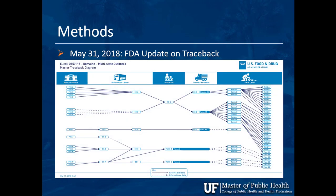May 31, the FDA gave an update on the traceback investigation. A traceback traces contamination back through the supply chain — from the consumer who got sick, to the restaurant or store, to the distribution center, to the processor, the harvester, and finally the grower and the specific field. The traceback diagram had one particularly clear straight line leading directly from Alaska — where about eight prison inmates got sick — all the way back to Yuma, Arizona, allowing easy tracing to a farm called Harrison Farms.